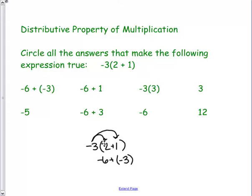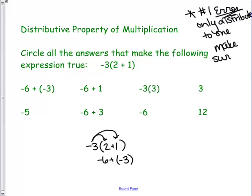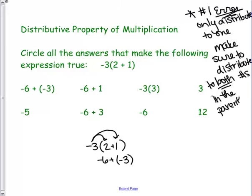Remember, the distributive property goes to both numbers. The number one error, write this down, the number one error that people make is they only distribute one time. We need to distribute to both numbers. That's the error. So you need to distribute to both numbers in the parentheses. So a negative 6 plus a negative 3. Here we go. That's that one.